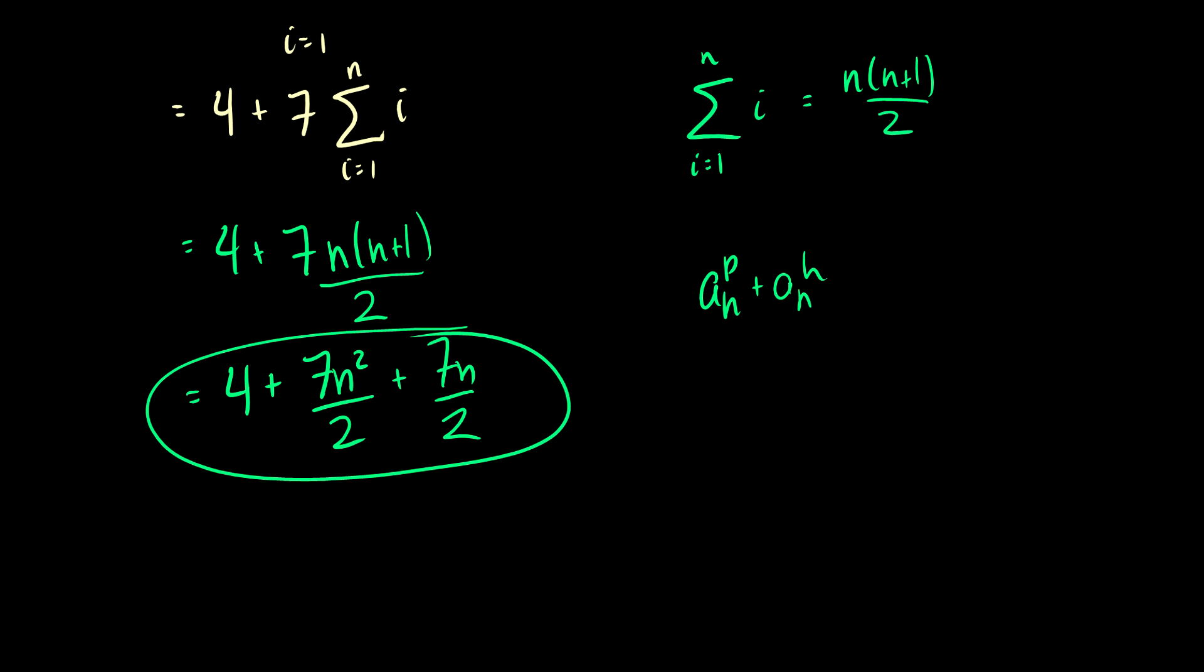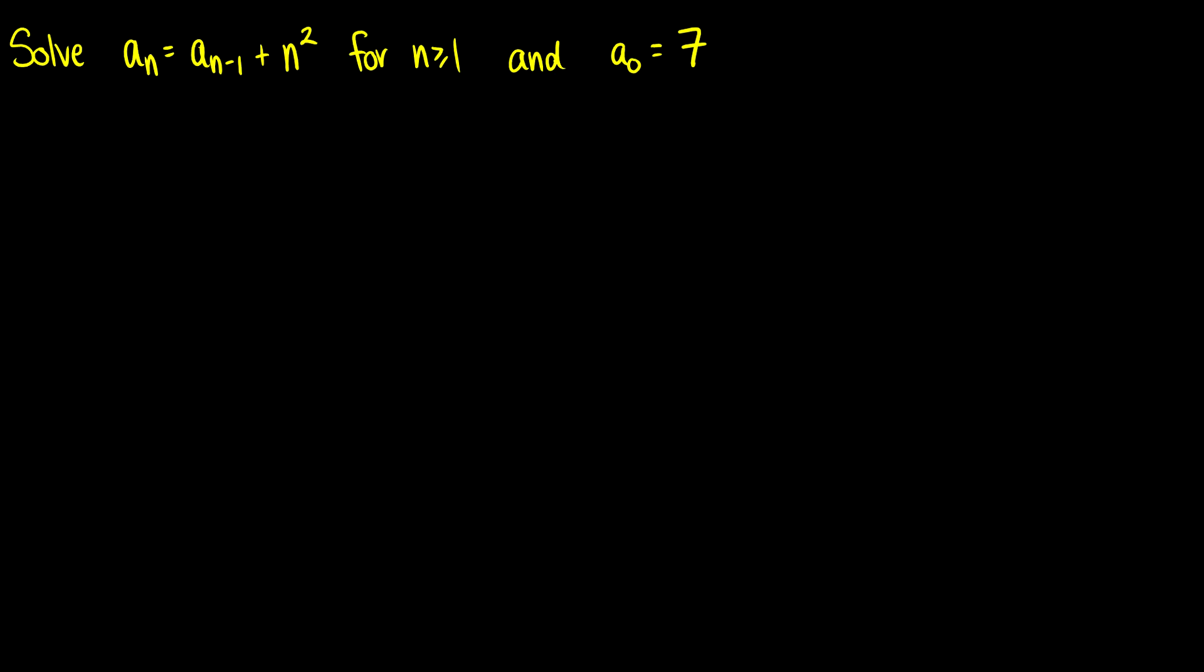So let's do another one. Let's do an is equal to an minus 1 plus n squared. Okay, so all to one side, an minus an minus 1 is equal to n squared. So here our f of n is equal to n squared.